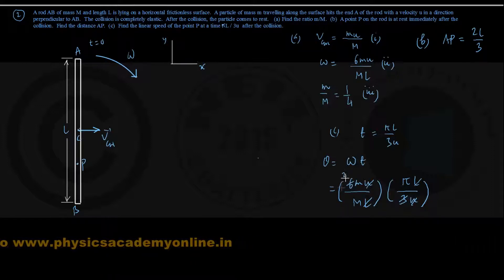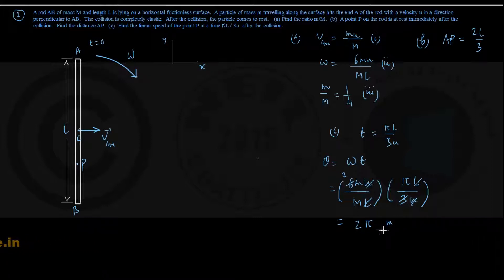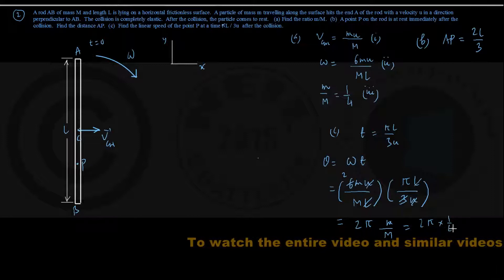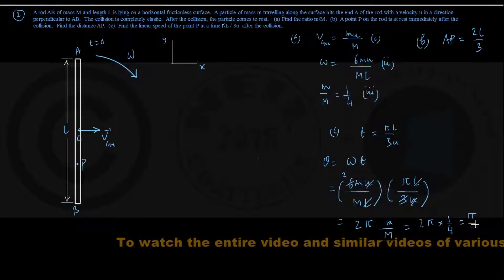Leaving only a 2 in the numerator, and this is giving me 2 times π times small m by capital M. But small m by capital M was already found in part A of the problem, the third result, 1 by 4. So this is coming out to be 2π times 1 by 4, that is π by 2.